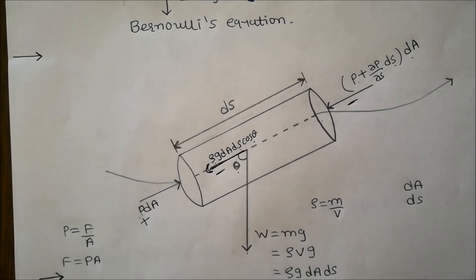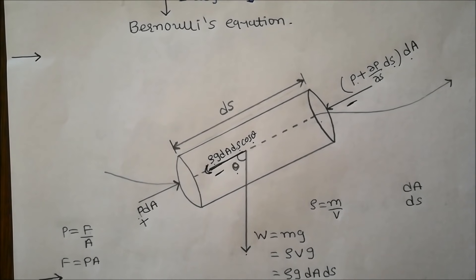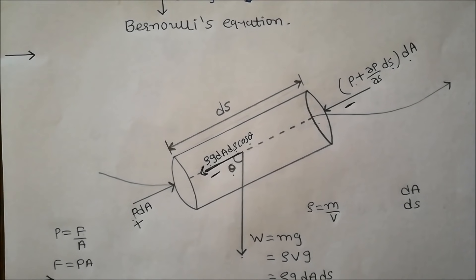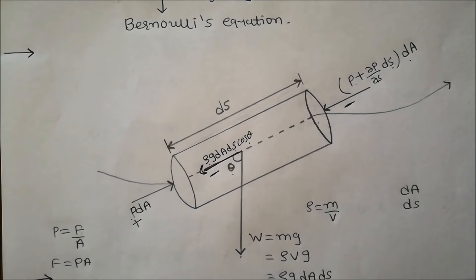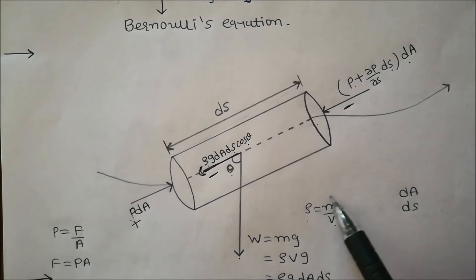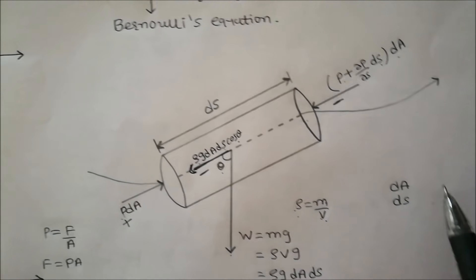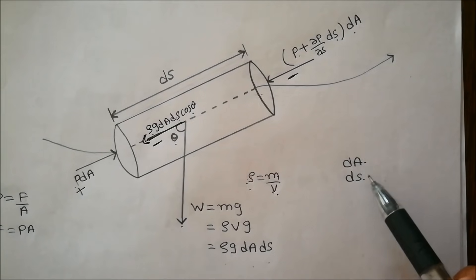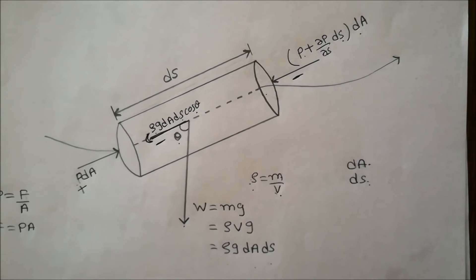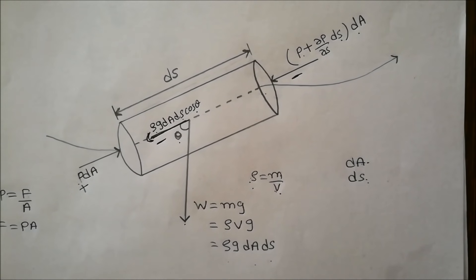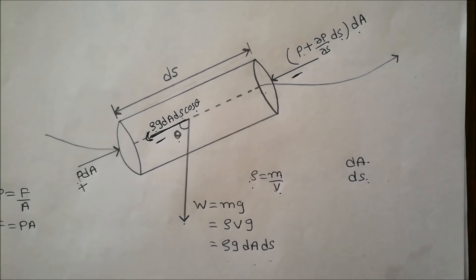By Newton's second law, F = ma, this resultant force equals the mass of the fluid element multiplied by acceleration in the direction of fluid flow. Mass of the fluid element: since density ρ = mass/volume and volume = dA·dS, mass = ρ·dA·dS.